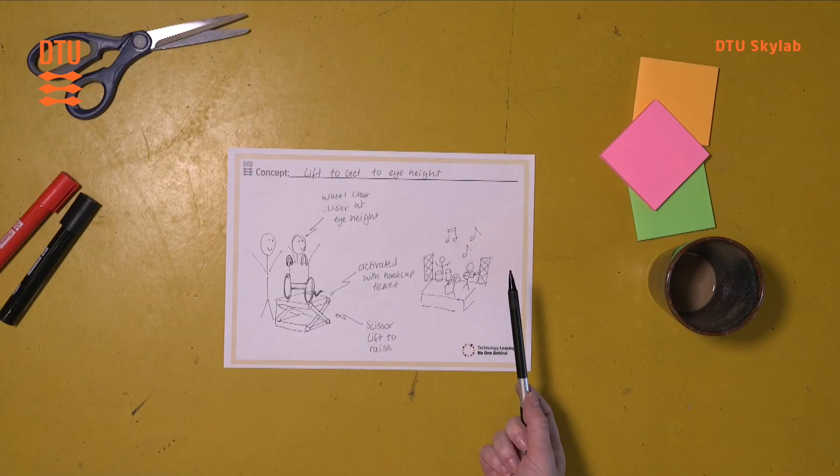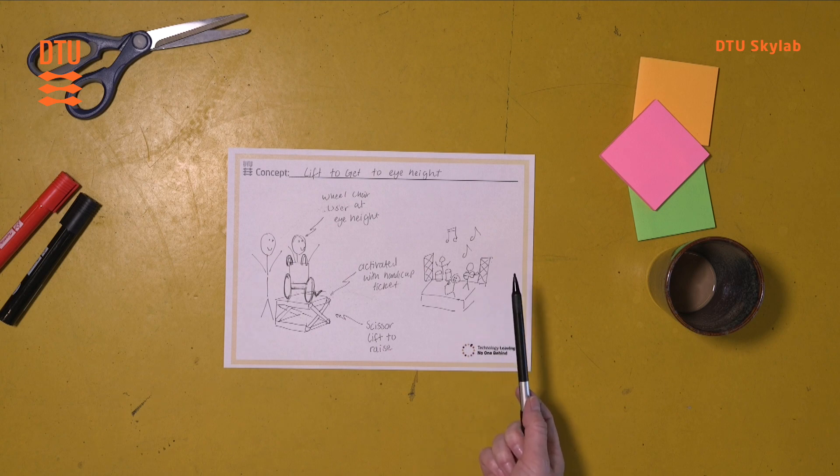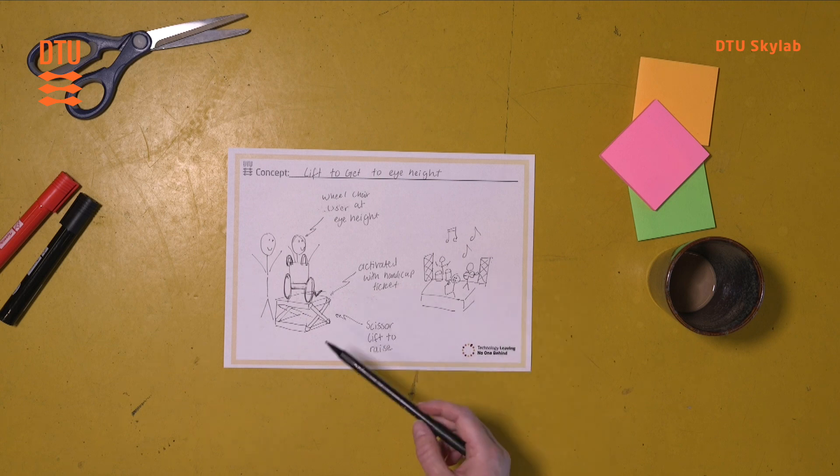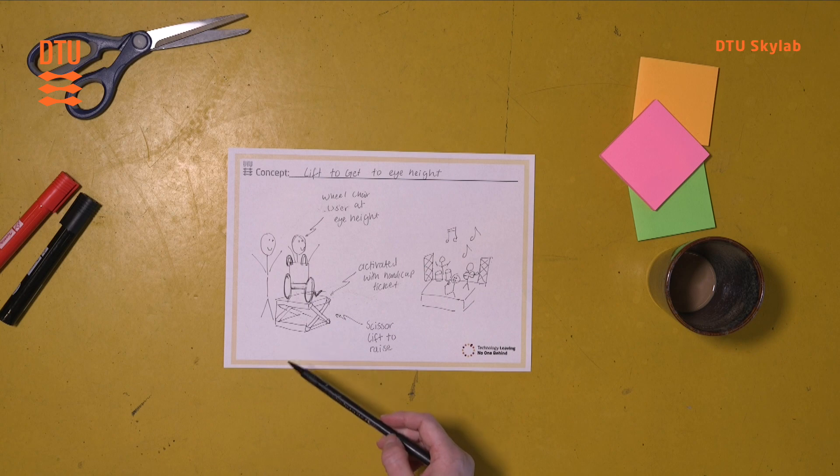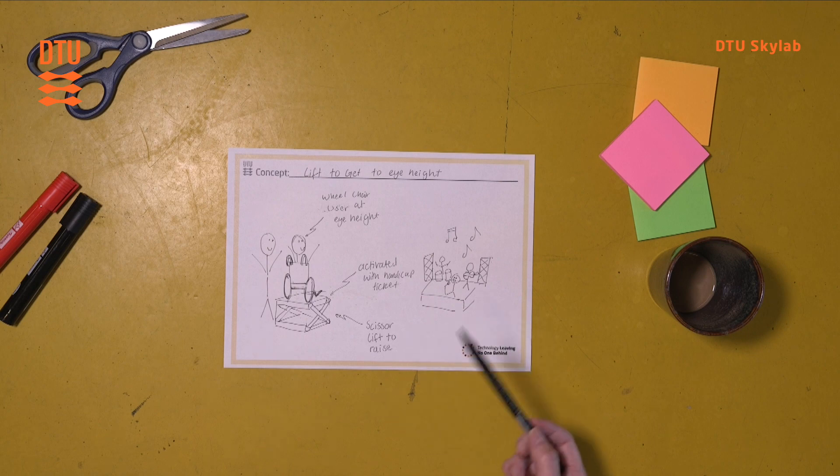When you want to narrow down solutions that have been generated in a workshop, one useful way to communicate those ideas in order to be able to narrow down on them is to prototype them, so that you can more easily indicate to the other participants what your idea is. One way of prototyping is to sketch.